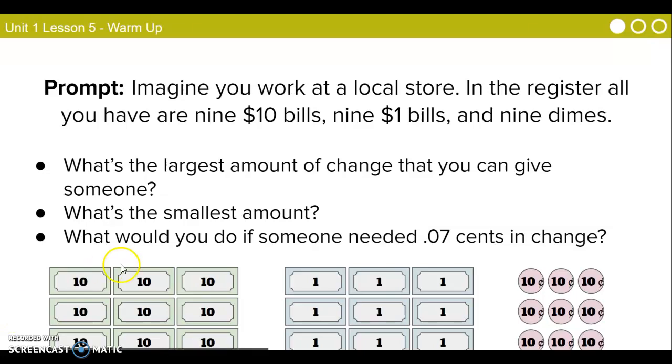So our first prompt sets us up like this, it says, imagine you work at a local store. In the register, all you have are nine $10 bills, nine $1 bills, and nine dimes. What's the largest amount of change that you can give someone? So, basically all the money in our entire register would be $99.90. It says, what's the smallest amount you can give someone? Well, the smallest amount would be one dime, so $0.10.